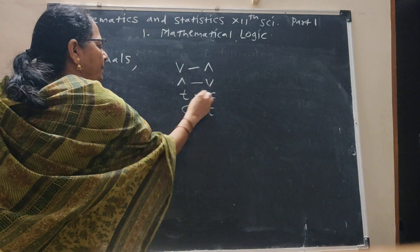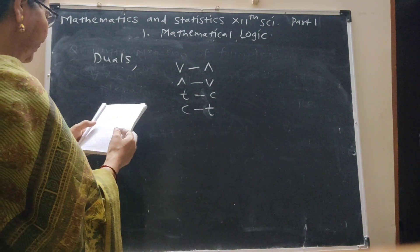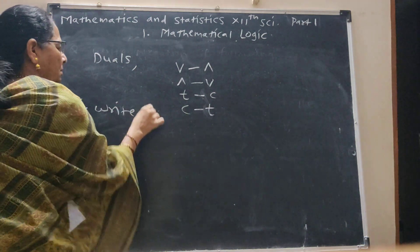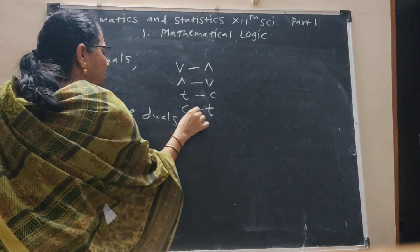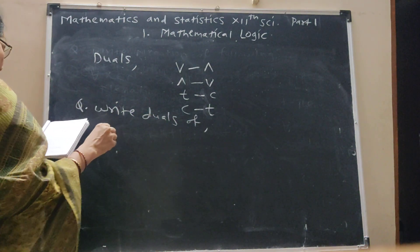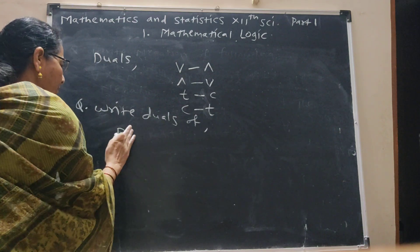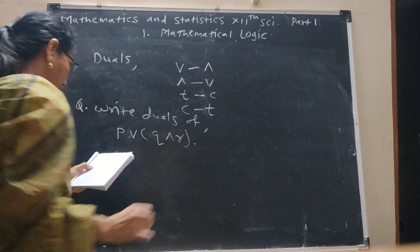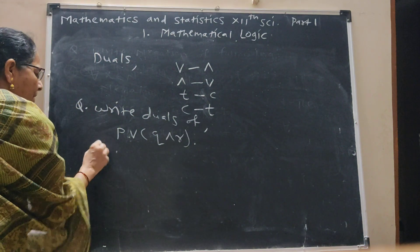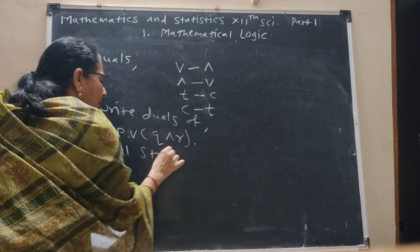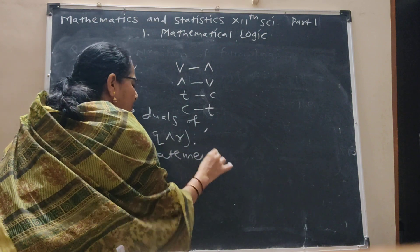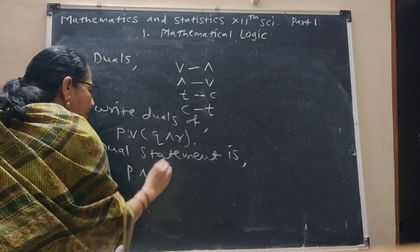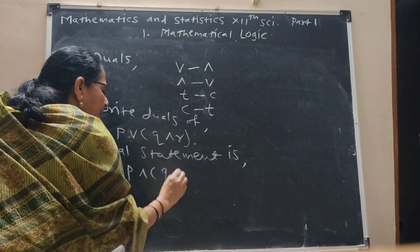Question: write the dual statement. Given statement: P or (Q and R). The dual statement is: P and (Q or R). When there is 'or', it is replaced by 'and', and 'and' is replaced by 'or'.